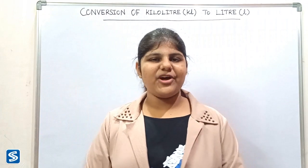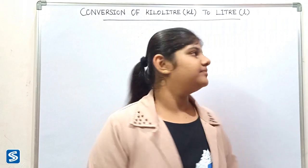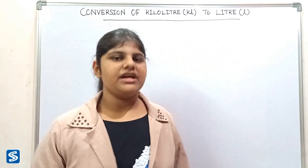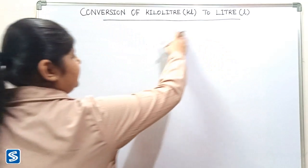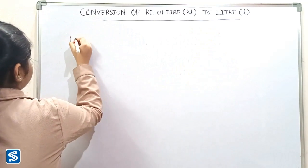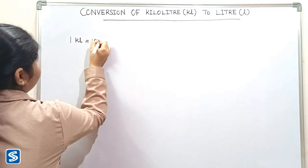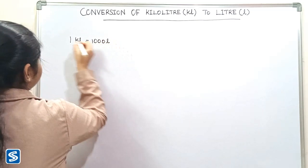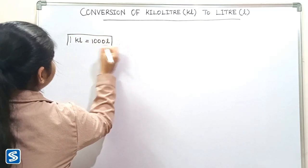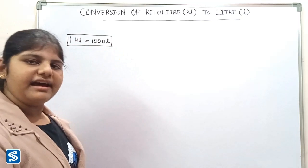Hi friends, welcome to my channel. In this video I am going to teach how to convert kiloliters into liters. The formula for converting kiloliters into liters is: one kiloliter is equal to one thousand liters.